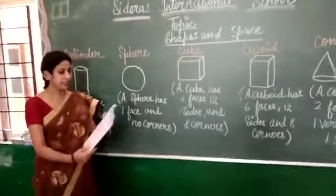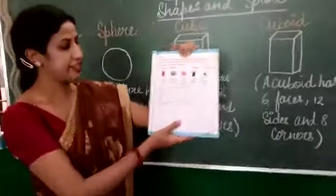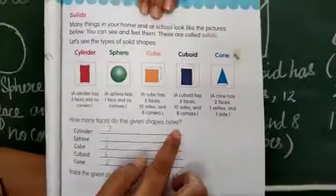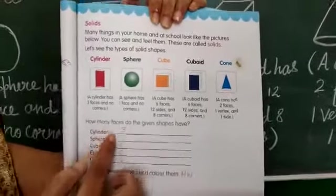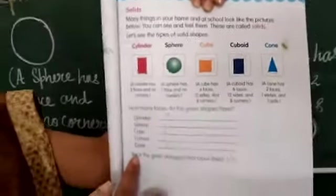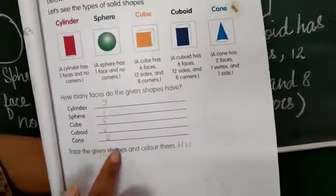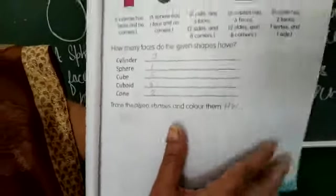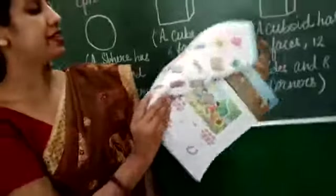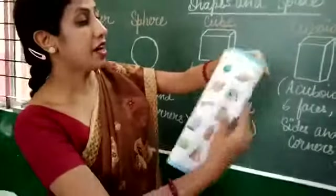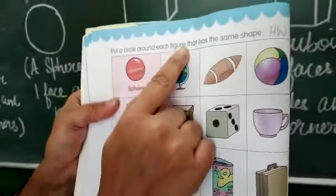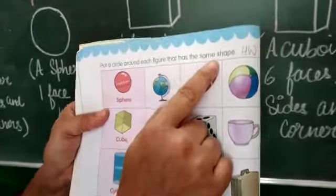These are your solid shapes. Next page, what do you want to do? See this, put a circle around each figure that has the same shape.